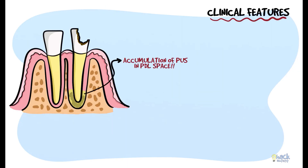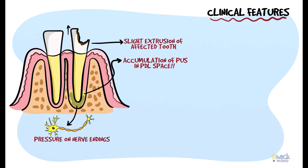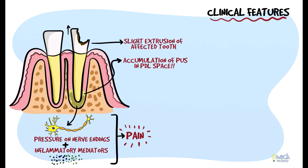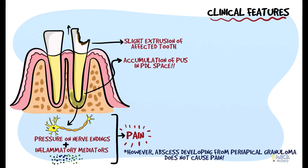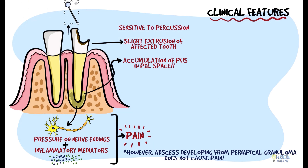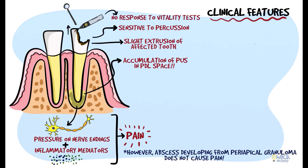Due to the accumulation of purulent material in the periodontal ligament space there may be a slight extrusion of the affected tooth in its socket. The purulent exudate could exert pressure on the nerve endings, and this along with chemical mediators of inflammation could cause severe pain. However, periapical abscess arising from an existing chronic periapical lesion like a periapical granuloma is asymptomatic and does not cause pain. The affected tooth is sensitive on percussion and does not respond to vitality tests.